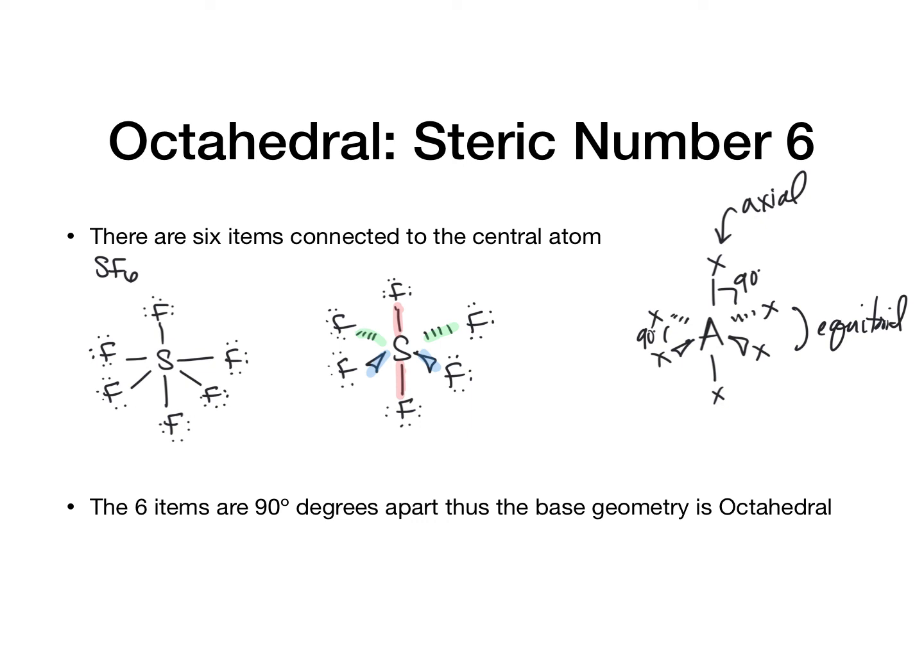These five basic structures — steric numbers 2, 3, 4, 5, and 6 — are the base geometries, and all of them have only atoms connected around the central atom. In the next video, we'll see how the structure changes once we start to substitute a bond for a lone pair.